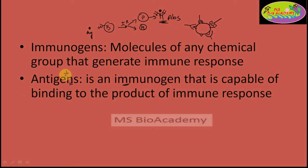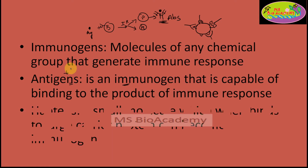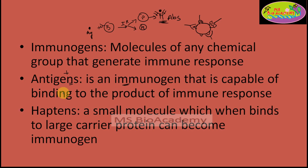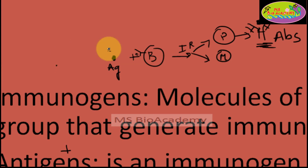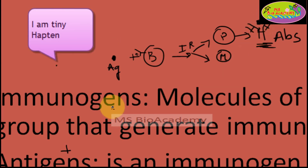Now let's see what haptens are. Haptens are basically small molecules — very tiny molecules of very low molecular weight — which, when bound to a carrier protein, can become an immunogen. Haptens are of such very low molecular weight that by themselves they are not capable of binding to antibodies.